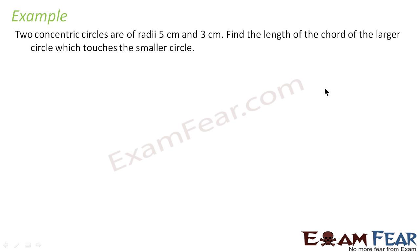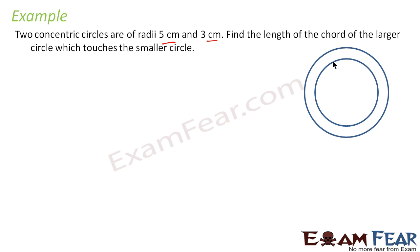Let's take an example: two concentric circles of radius 5 and 3 centimeters. Find the length of the chord of the larger circle which touches the smaller circle. So let's draw two circles of radius 3 and 5, and then draw the line which is a chord to the bigger circle but also touches the smaller circle.